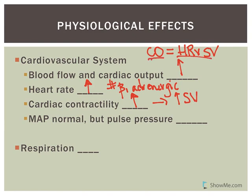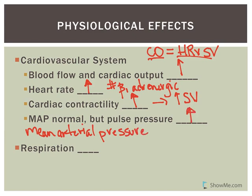Collectively, increased heart rate and stroke volume increase cardiac output. When you increase cardiac output, you can deliver more blood to the tissues — more oxygen and transport more carbon dioxide back from working tissues. Since metabolism is up, you need more oxygen and you'll be generating more carbon dioxide, so you want cardiac output to go up. Mean arterial pressure stays normal, but pulse pressure increases.